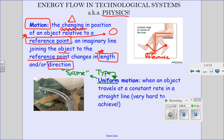Sports teams wear uniforms so they all look the same — so we know who goes with who. If everyone at this school had to wear uniforms, you would all look the same in terms of your clothes. So uniform motion is when an object travels at a constant rate — the same rate. When we say rate, you could think about the word speed. Uniform motion is when an object travels at a constant rate, at the same speed, in a straight line.